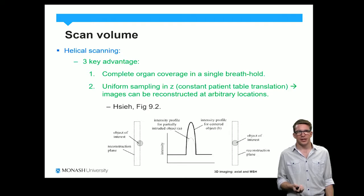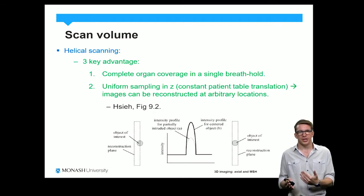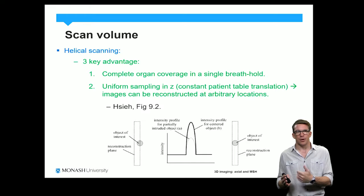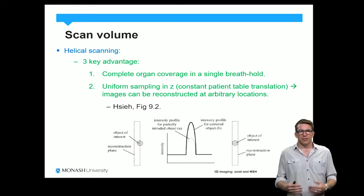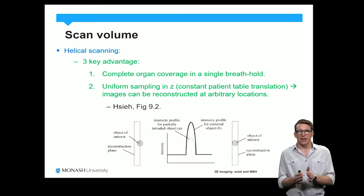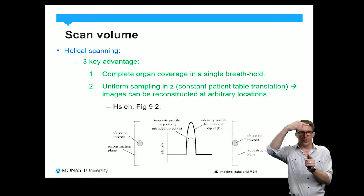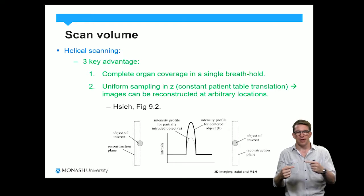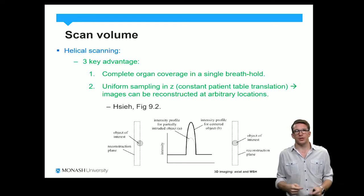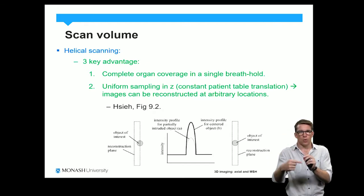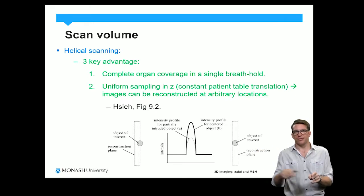There are three key advantages of helical scanning. The first is that we get complete organ coverage in a single breath hold because we can vary our pitch — something we clearly couldn't do in axial scanning mode. The increased sampling means that we can reconstruct slices at arbitrary locations. In axial scanning, at any given Z location we had all 360 degrees of data, but now because the patient bed is moving continuously while the scan is ongoing, we don't have all of our angular data at one Z but have some angular data at each Z — the data spread out on a theta versus Z plot.